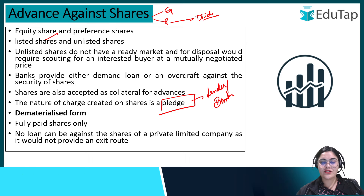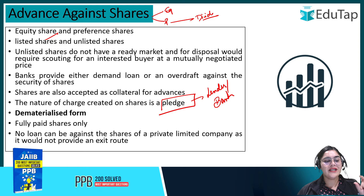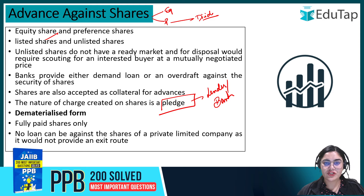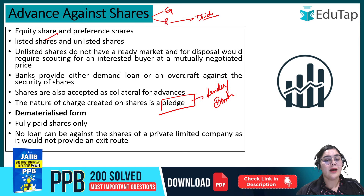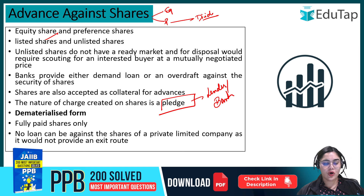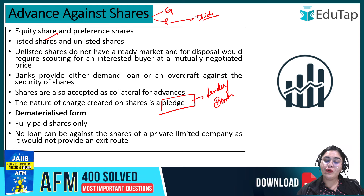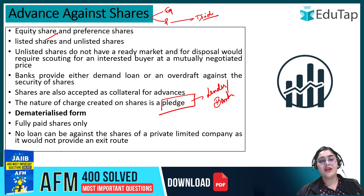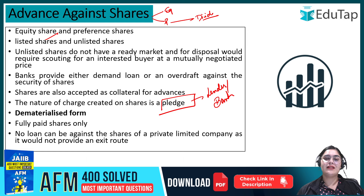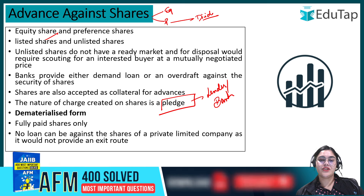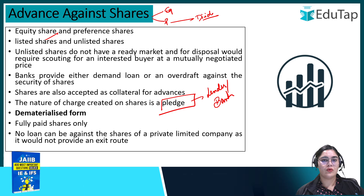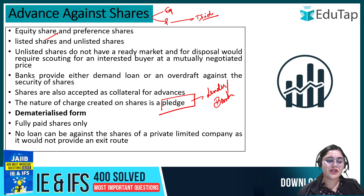The shares given against loans should be in DMAT form and must be fully paid shares — not partly paid. For example, if you have 1,000 shares, they should be fully paid up. It should not be the case that you still owe part of the payment to the company.